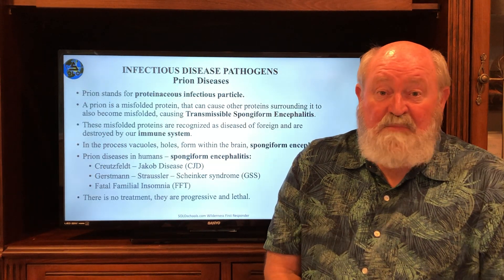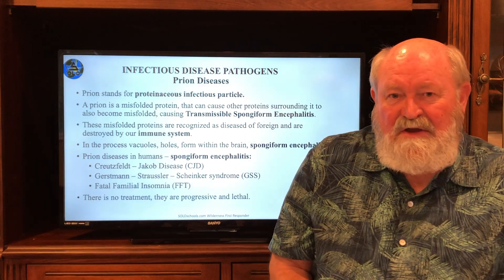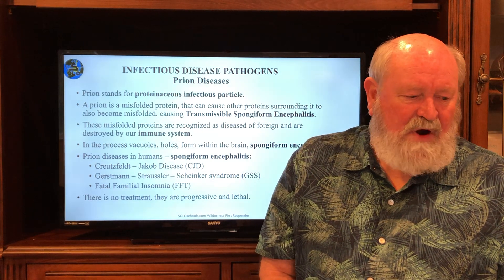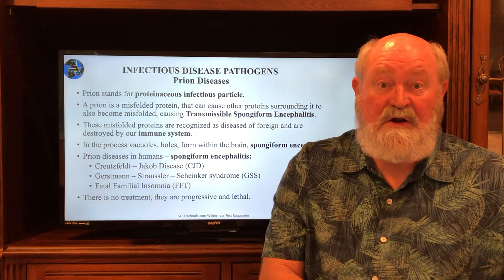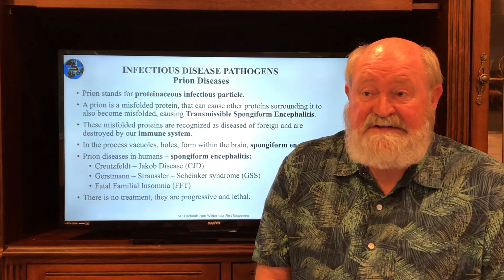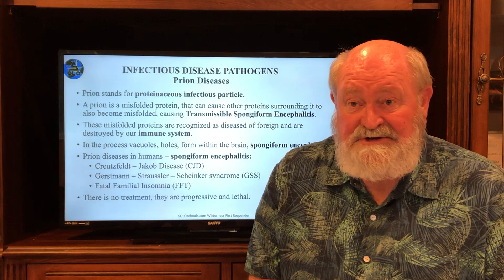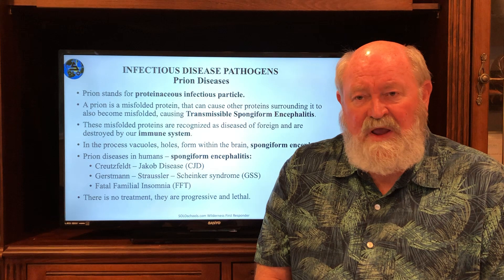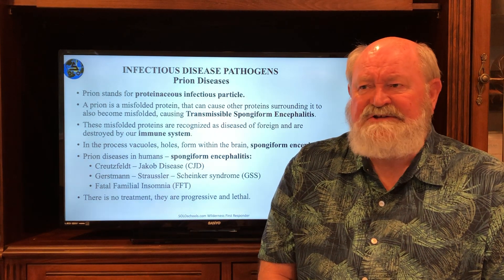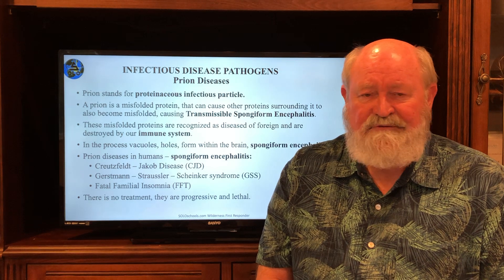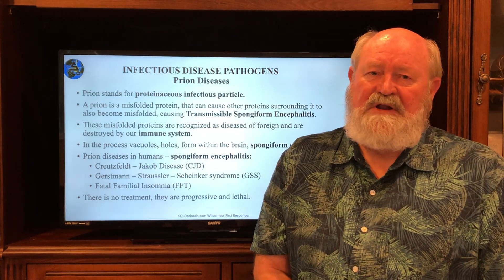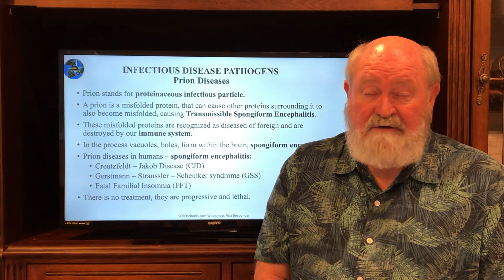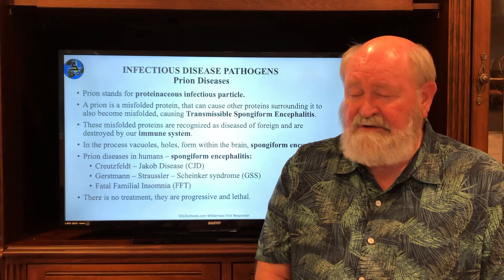The first thing is a prion. What is a prion disease? You may have heard of it — it's mad cow disease. Prion stands for a proteinaceous infectious particle. It's a protein — not a cell, it doesn't have a cell wall, it doesn't have genetic material. It is a misfolded protein. We're not even sure how we get it in our system, but we think it may come in orally through food — that we've eaten something with this misfolded protein in it, and then it works its way through our intestinal system into our cardiovascular system and up into the brain.